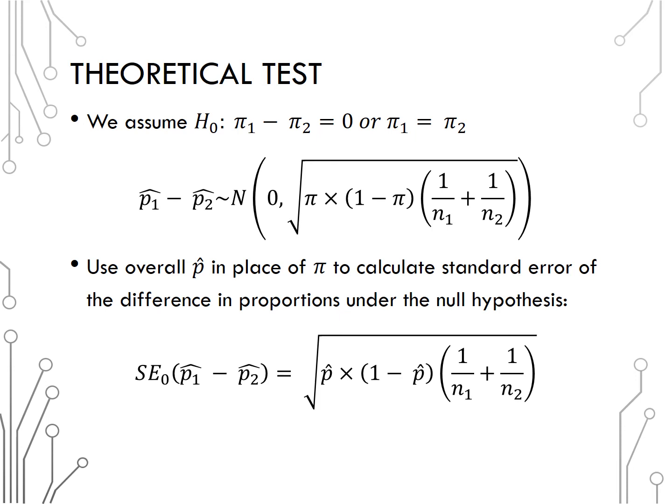So we are going to use our overall p hat in place of pi to calculate our standard error for the difference in sample proportions under the null hypothesis. Make sure you work through a few problems like this in your calculator. Most people who try to do it all at once can get very wonky answers.